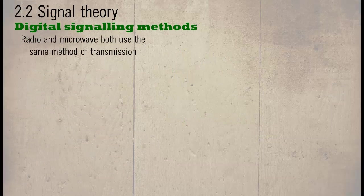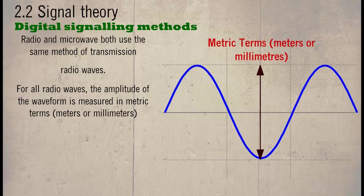Radio and microwave both use the same method of transmission: radio waves. For all radio waves, the amplitude of the waveform is measured in metric terms, meters or millimeters.